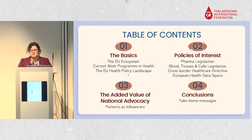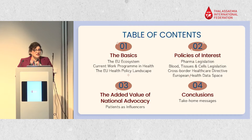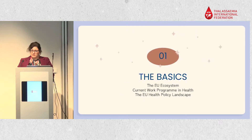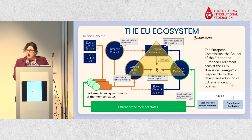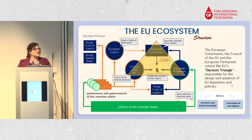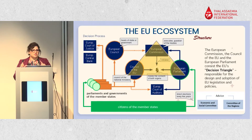Here is the EU ecosystem. Maria showed a very nice simplified graph, but this is the real structure of how things work at the EU level. We are fortunate to be members of the European Union because there is coordination, control, and collaboration between countries to improve things. There is a triangle in the middle of the structure called the decision triangle, and everything we do targets that specific area.